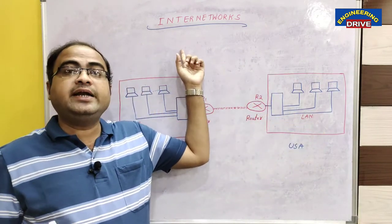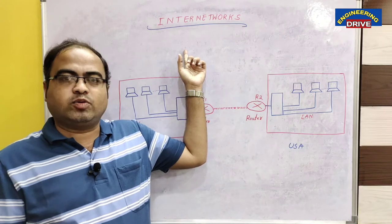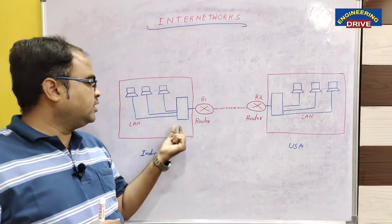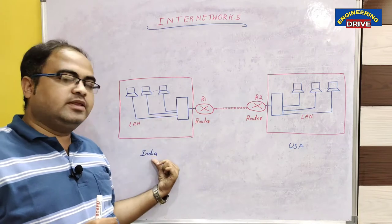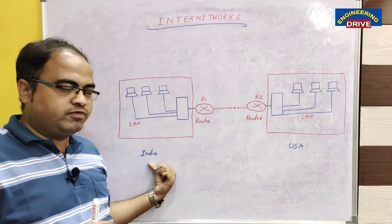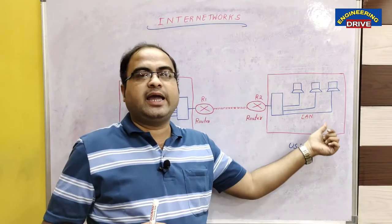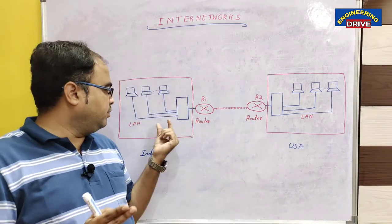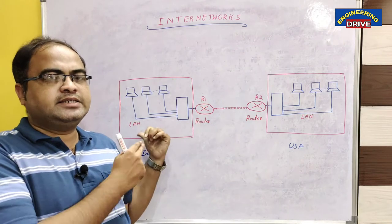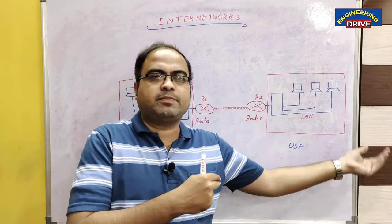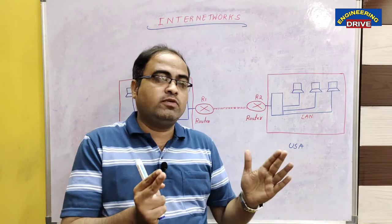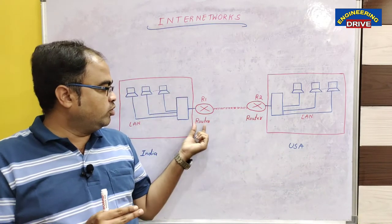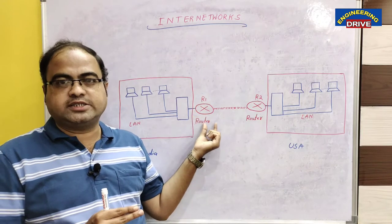Now what is our topic? Inter-networks. Sometimes the employees of the Indian office want to communicate with the employees of USA. How can we establish this communication? India is a separate country, USA is a separate part of the world, yet we want to establish communication — and this is done with the help of routers.